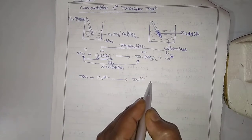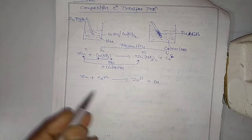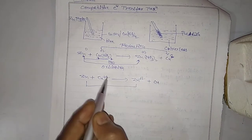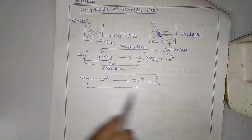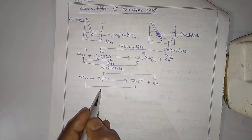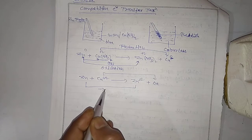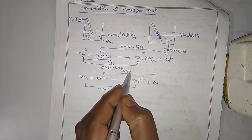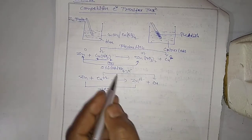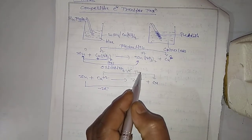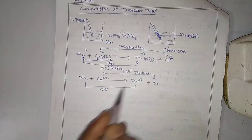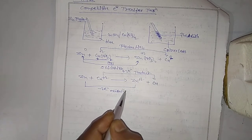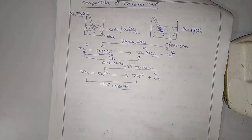Zn²⁺ plus Cu. So, as discussed in the last video, this reaction involves 2 electrons lost and 2 electrons gained. So this is reduction and oxidation — meaning electron transformation from one metal to another. This causes the color to disappear, becoming colorless.